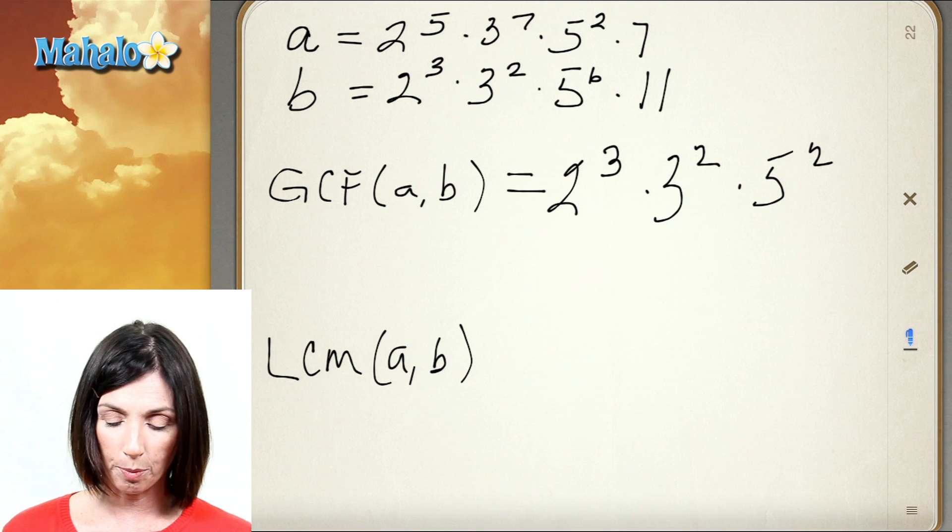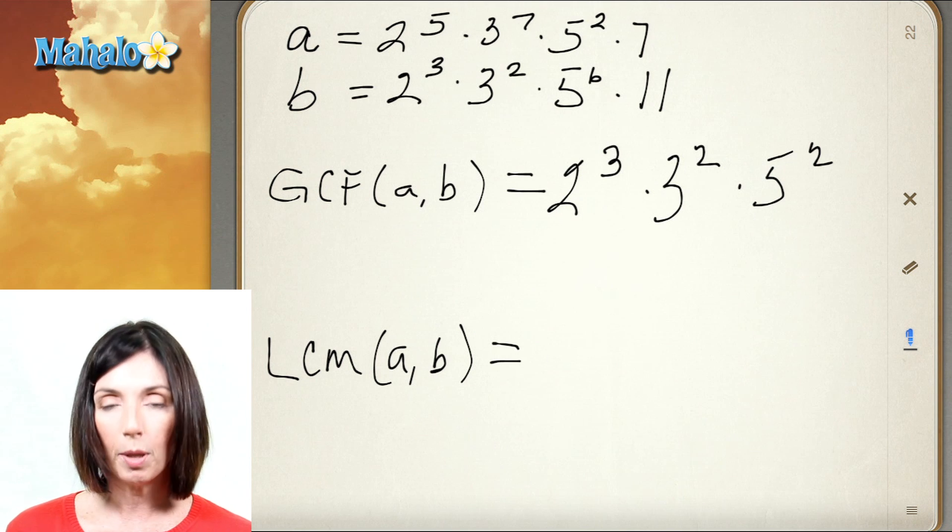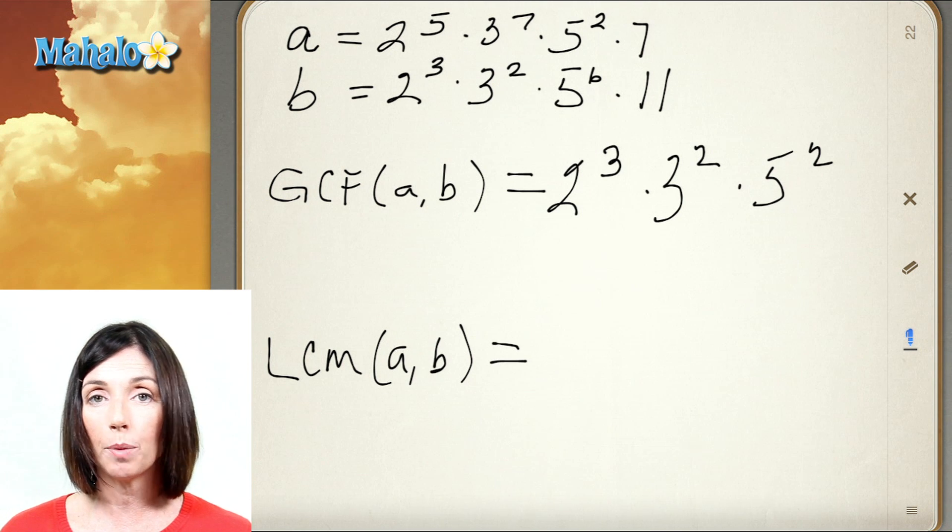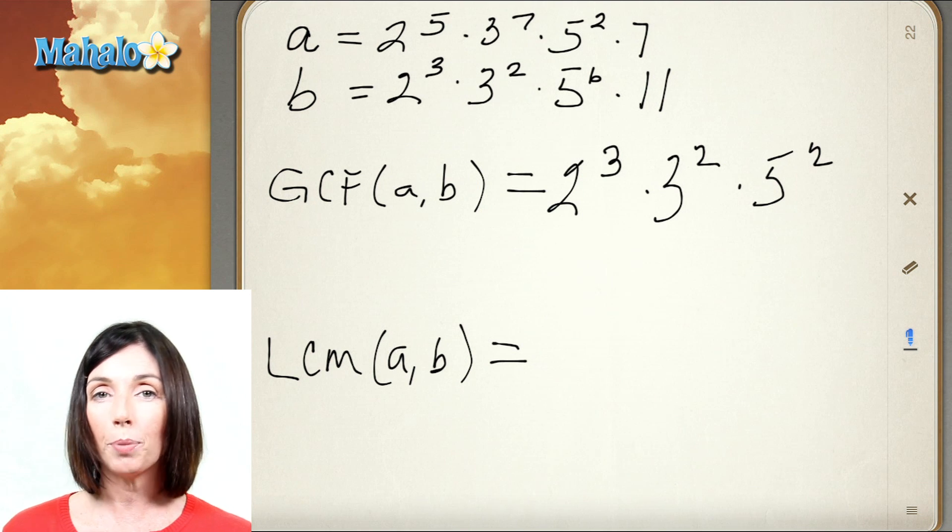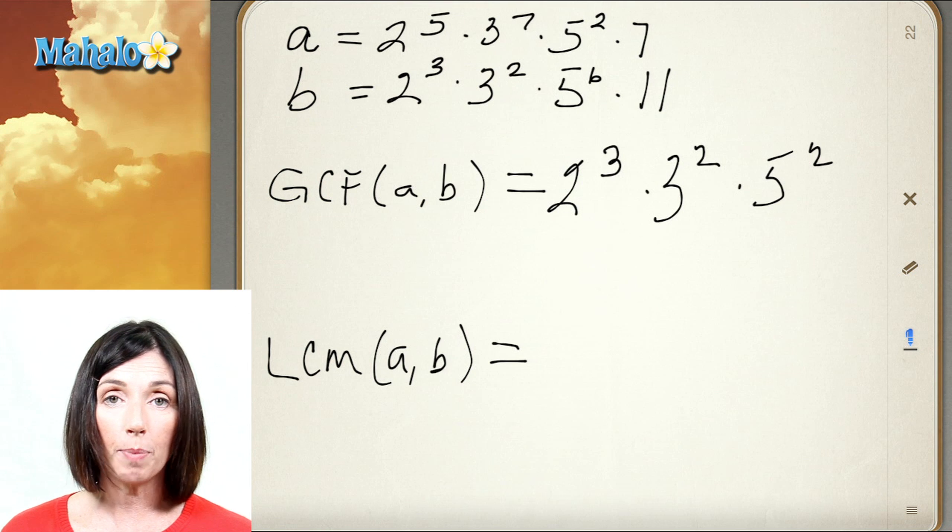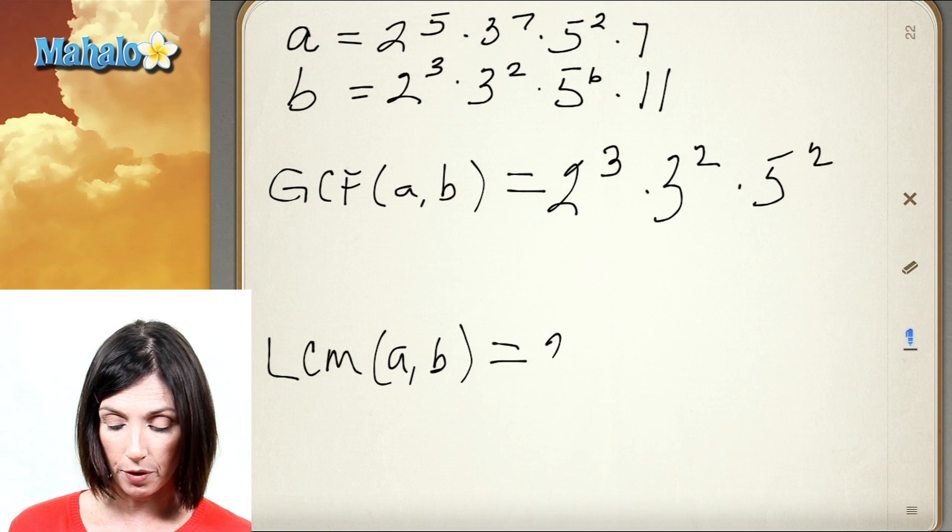Now let's look at their least common multiple. To find the least common multiple, I have to take the largest power of anything that appears in either prime factorization. So I'm pretty much going to get everything that's left over. I've got the largest power of a 2 that appears is 2 to the fifth. So I'm going to take that.